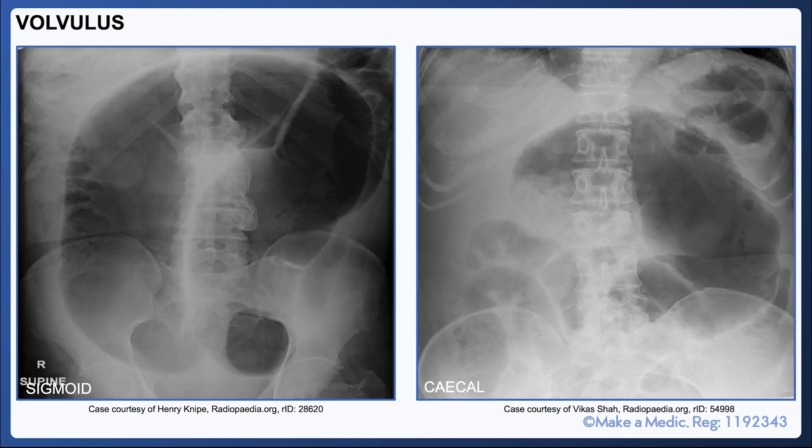Volvulus is a term used to describe twisting of a loop of bowel on its mesentery. The torsion can cause an obstruction, meaning that a loop of bowel proximal to the obstruction fills with food, fluid, and gas. Furthermore, the torsion can obstruct the venous drainage of the affected bowel, resulting in venous stasis and, if left uncorrected, venous infarction and bowel perforation.